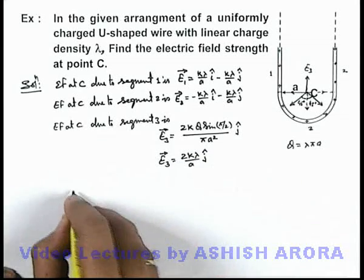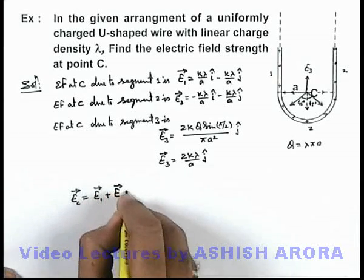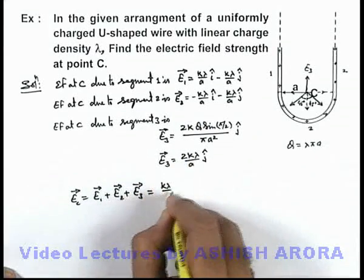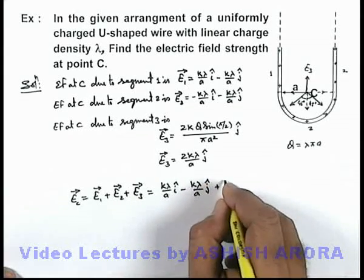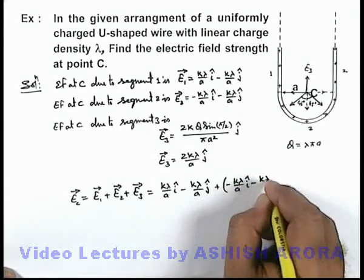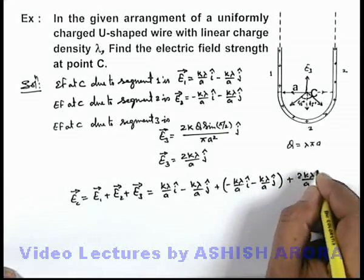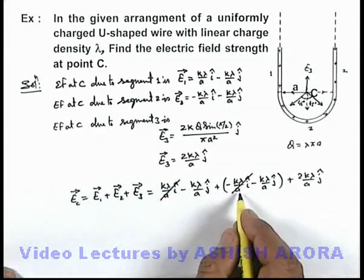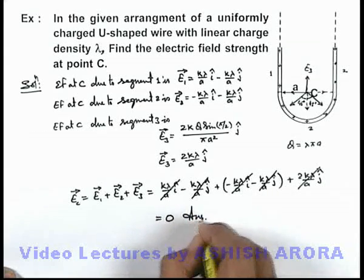The net electric field at point C is E1 + E2 + E3. Substituting: (k·λ/a) i-cap − (k·λ/a) j-cap + [−(k·λ/a) i-cap − (k·λ/a) j-cap] + (2k·λ/a) j-cap. The i-cap terms cancel, and the j-cap terms also cancel, giving a total result of zero. That is the answer to this problem.